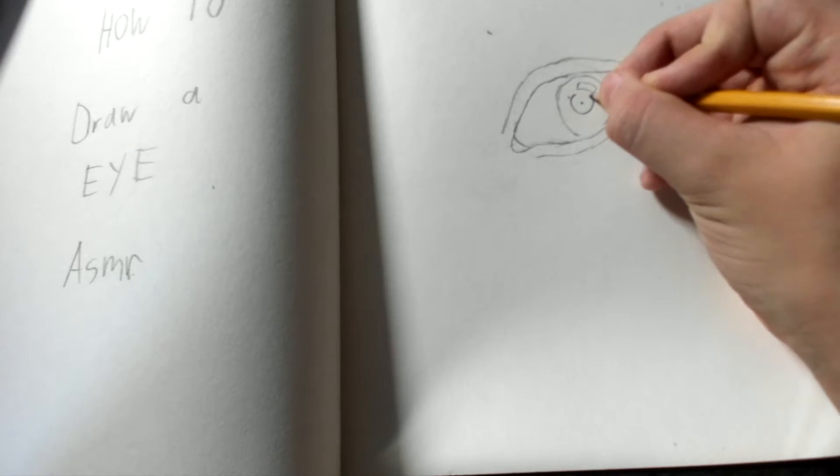So, what you want to do is draw a dot right in the middle. Make a circle around that dot. And fill the eye. So, like that.